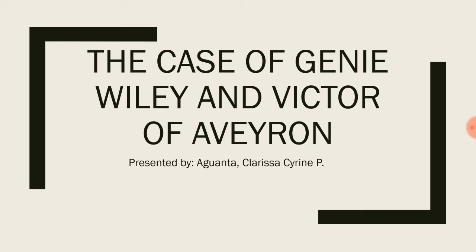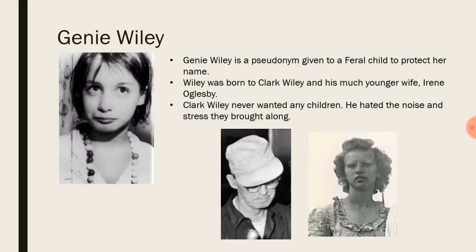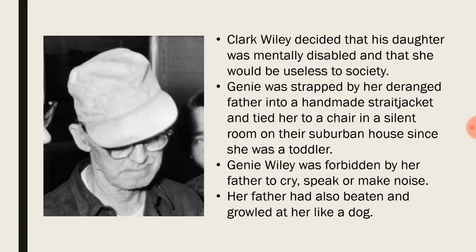Genie Wiley is a pseudonym given to a feral child to protect her name — it is not her real name but rather one given to her when she was being observed by scientists. She became a feral child because of her father, Clark Wiley. Genie was born to Clark Wiley and his much younger wife, Irene Oglesby. Clark Wiley never wanted any children and hated the noise and stress they brought. He decided his daughter was mentally disabled and would be useless to society. The child was trapped by her deranged father in a handmade straitjacket and tied to a chair in a silent room of their suburban house since she was a toddler.